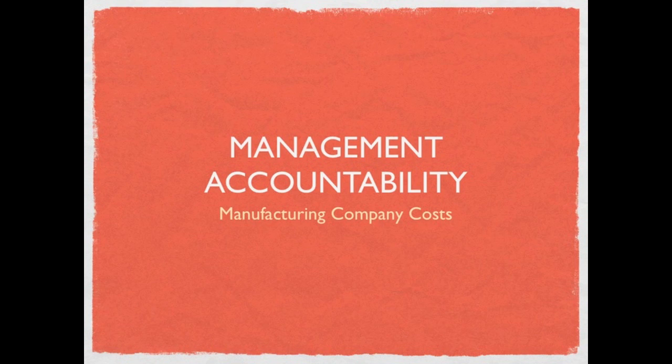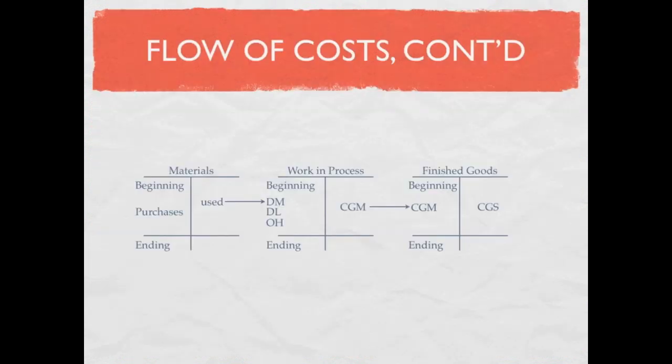This is part five in our management accountability series on manufacturing company costs. We're going to take up where we left off in part four with our three inventory accounts for a manufacturing company and how the costs flow through those T-accounts. When we used materials, the direct materials went into work in process along with direct labor and overhead — those three costs made up product costs.